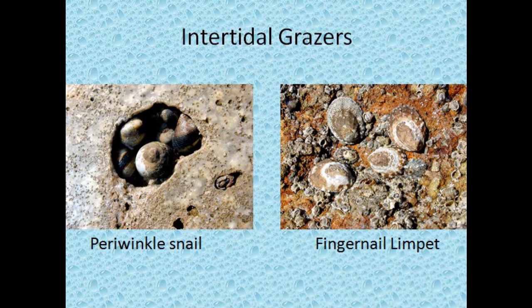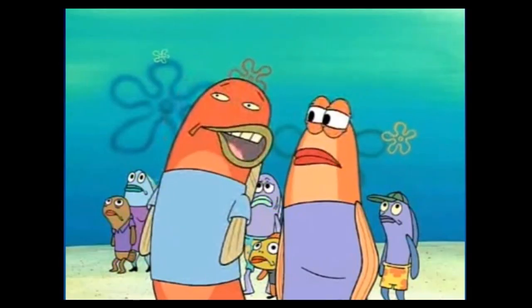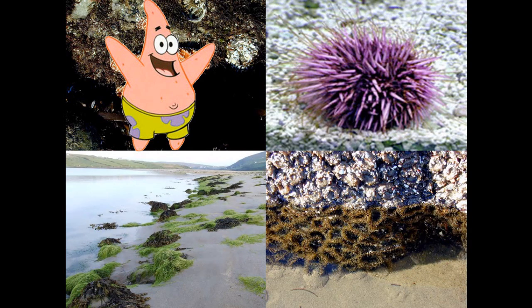Intertidal organisms include grazers like the periwinkle snail and the fingernail limpet, barnacles like the buckshot and gooseneck barnacles, as well as sea stars, sea urchins, seaweeds, and sea cucumbers.